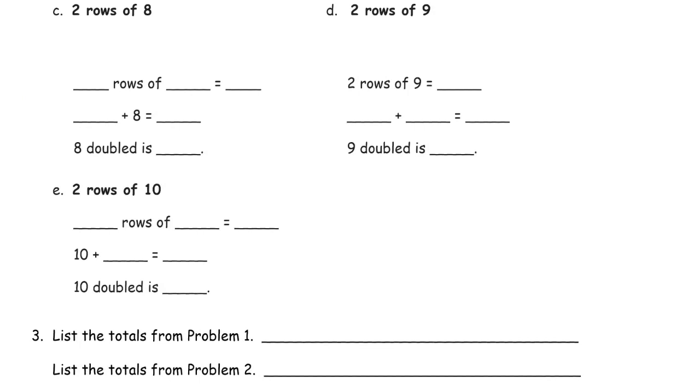Two rows of eight. One, two, three, four, five, six, seven, eight. Try to make them evenly spaced if you can. One, two, three, four, five, six, seven, eight. Two rows of eight. You can count them all. But, if you know what eight plus eight is. Sixteen. Eight doubled is sixteen.